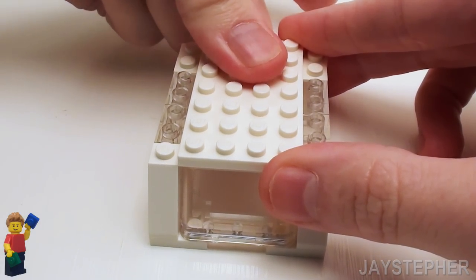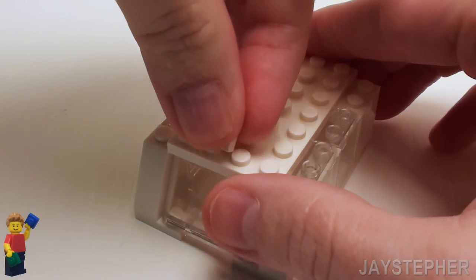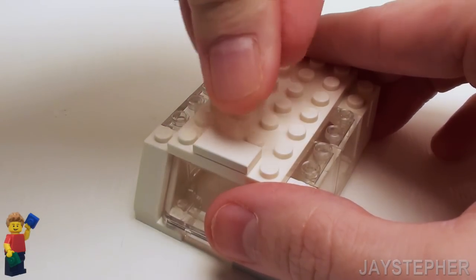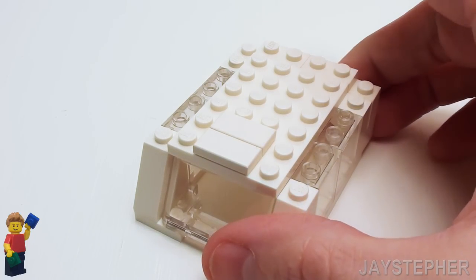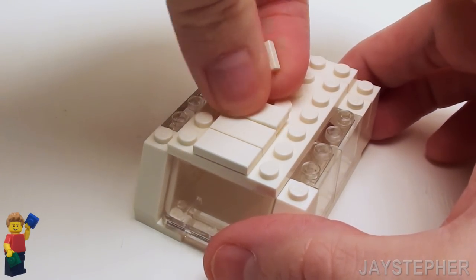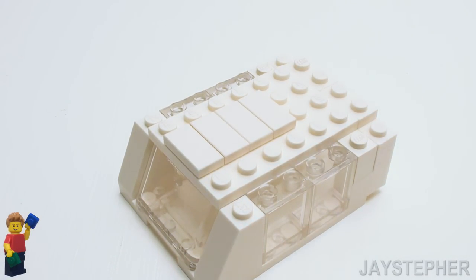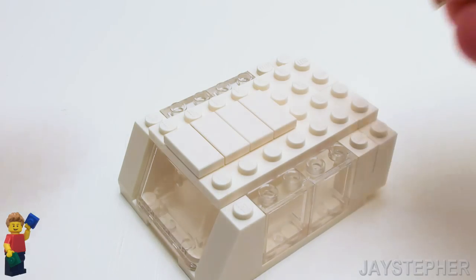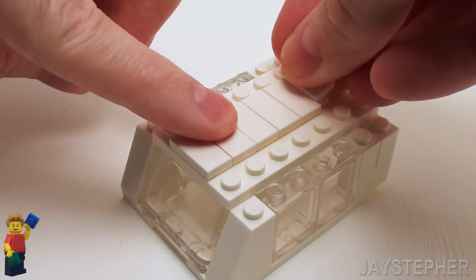Now I want to smooth off the top. This doesn't look too well. Let's place 7 1 by 2 flat tiles right in the center. I like to have a finished top on my projects. That's why I go a little crazy on the tiles.